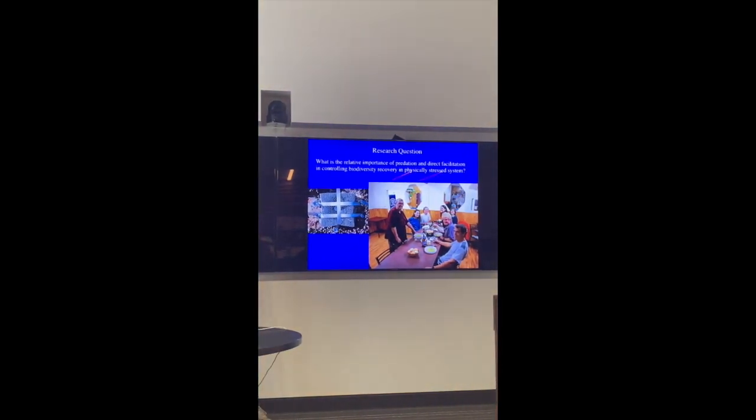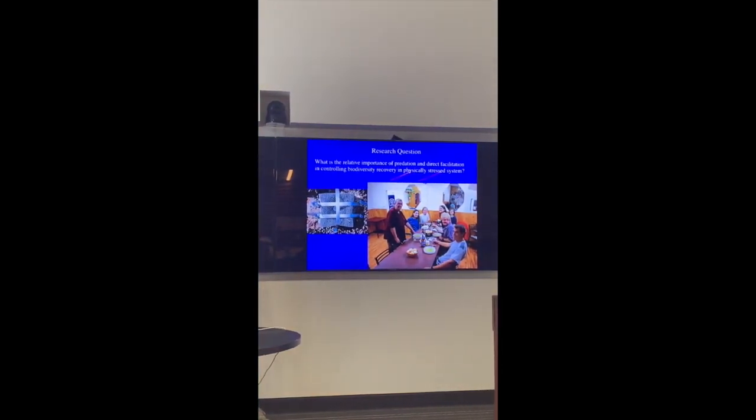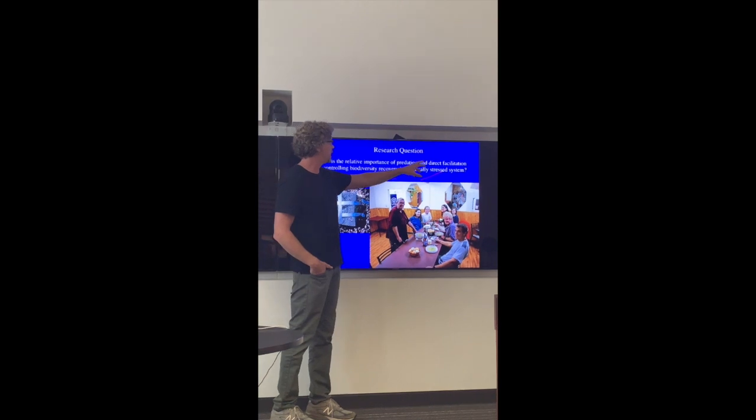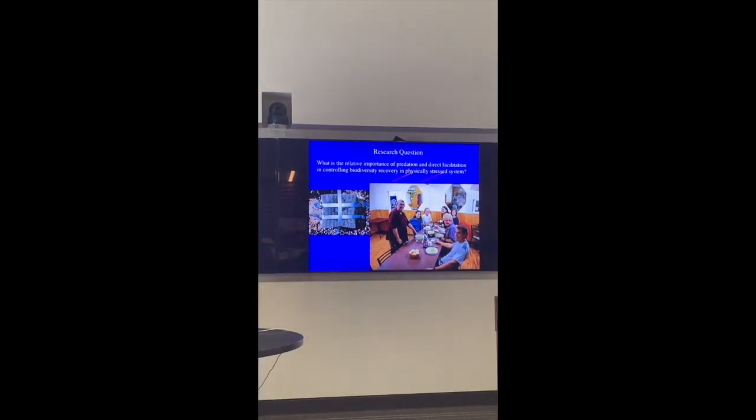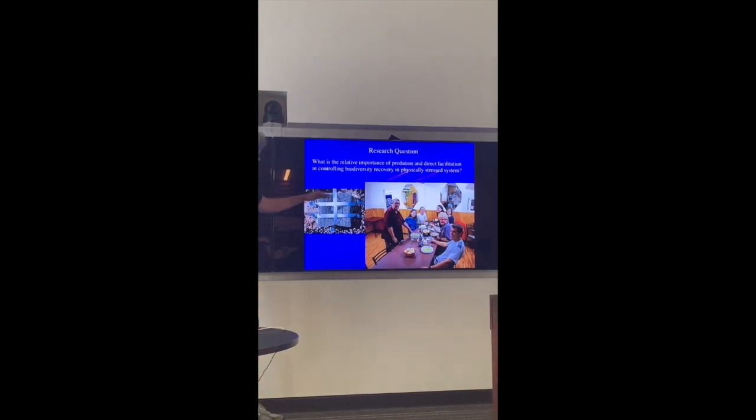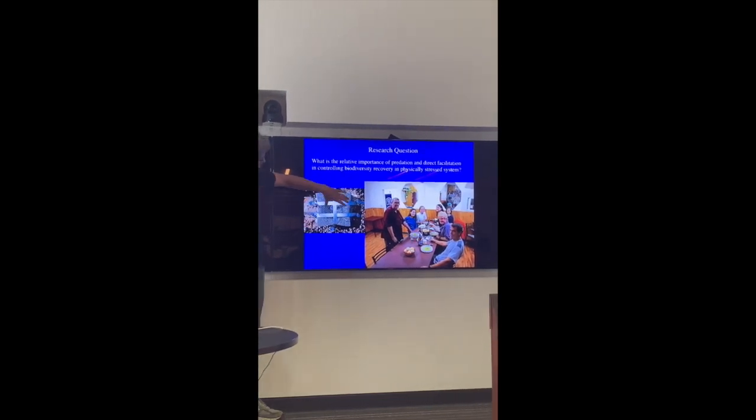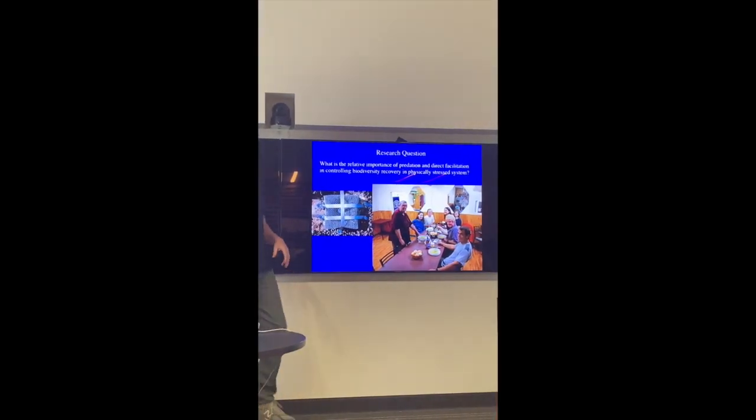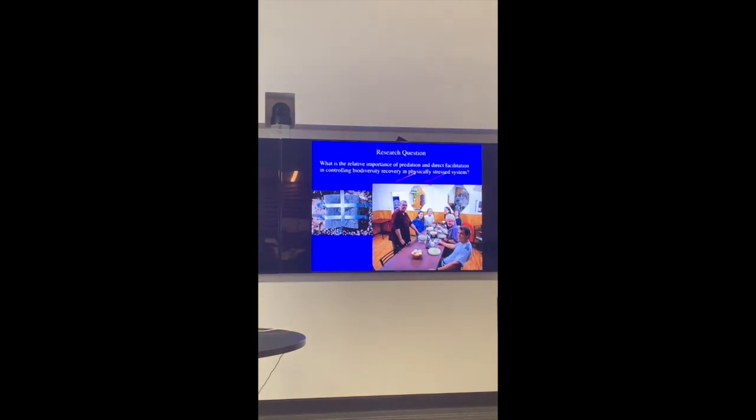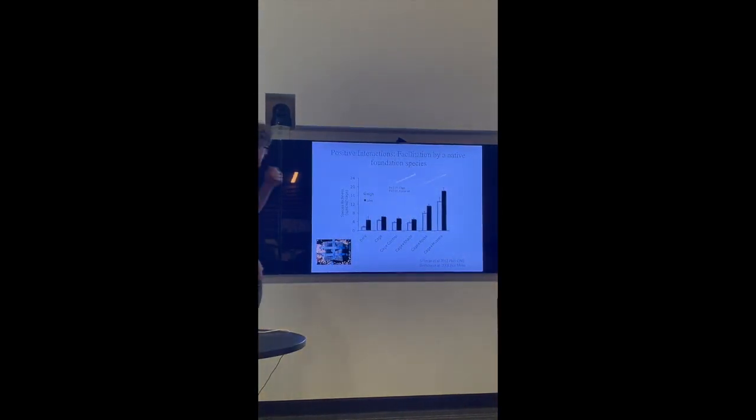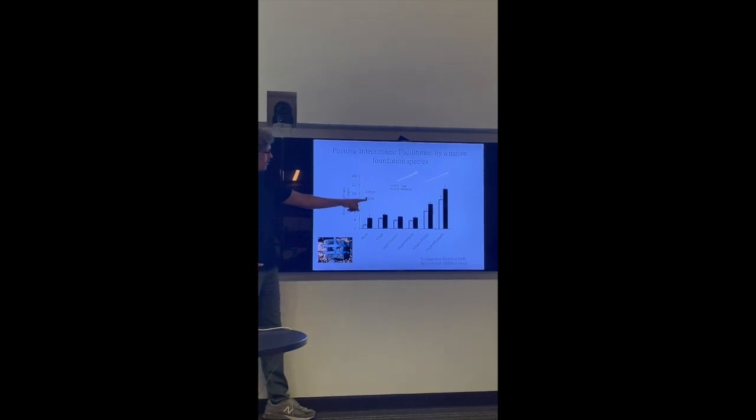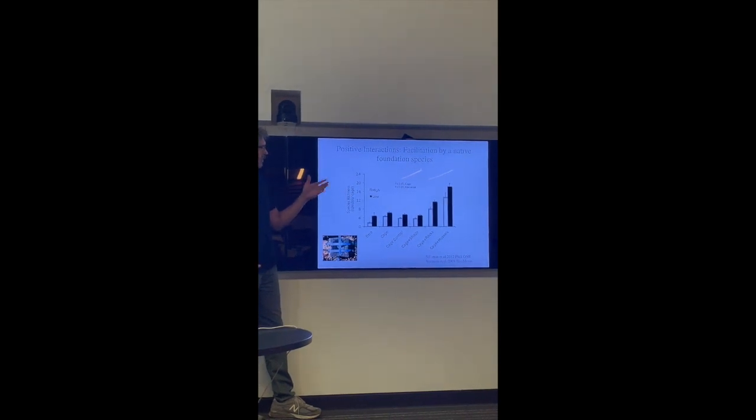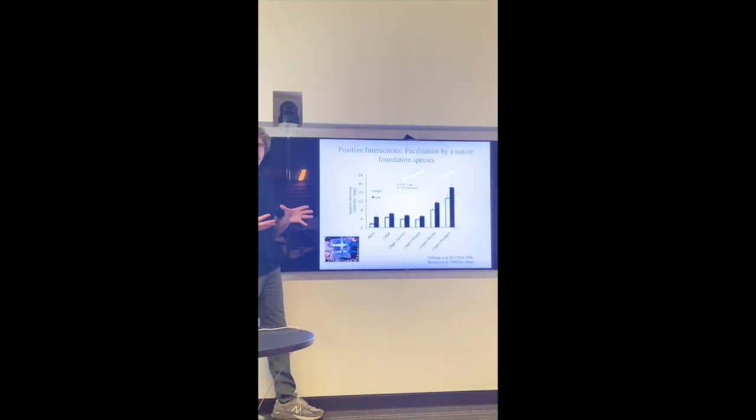So we asked the question, what is the relative importance in this highly stressed physical system of predation and direct facilitation in controlling biodiversity? In physically stressed systems, we cleared off plots and we excluded predators, had cage controls or excluded predators with mussels and then mussel mimics. And waited three years to see how biodiversity accumulated.